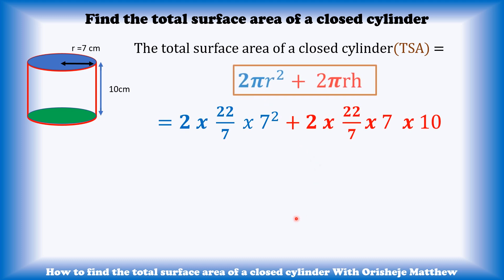Let's substitute. We have 2 times 22 over 7 multiplied by the square of the radius, plus 2 times 22 over 7 for pi, multiplied by the radius 7, then multiplied by the height 10.